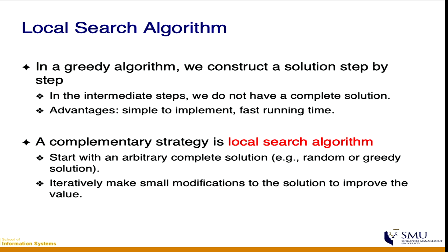The idea of local search is that you start with a complete solution and then you try to tweak it in a systematic way, such that even a small tweak will bring you to the next solution that might be better than the current one. The pseudocode is simple: you start with a complete solution, which could be something arbitrary like random.